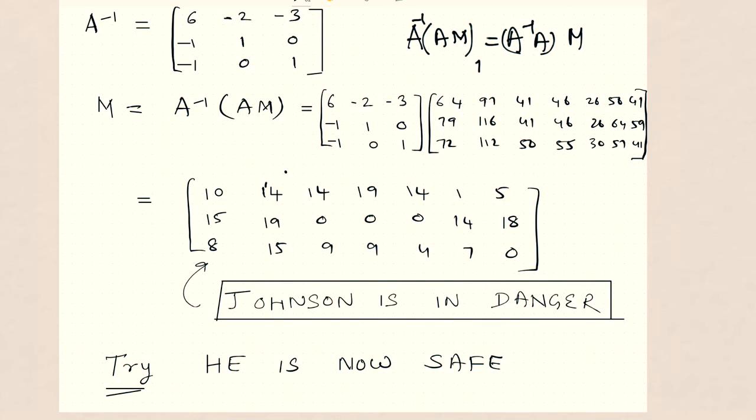So what happens is A inverse into AM becomes A inverse A into M. Now this is I. So this is like I into M. And if you recollect, I is a unit matrix. So I into M is M. So again, this is decoded. So this is what we are doing here.